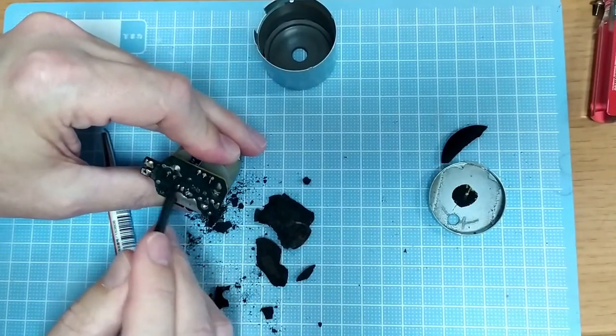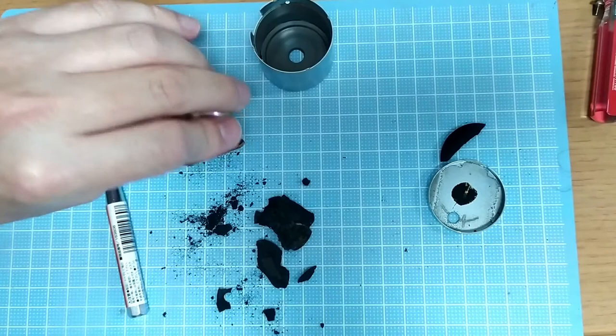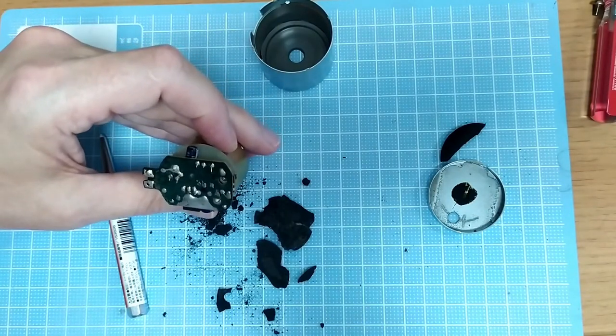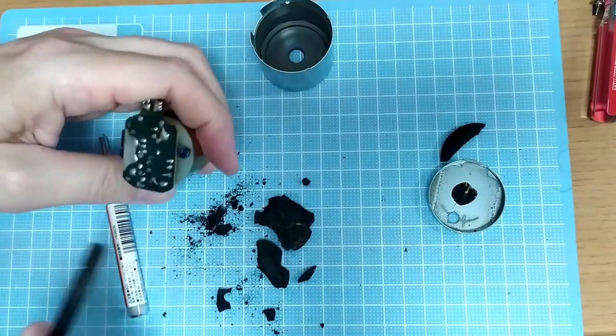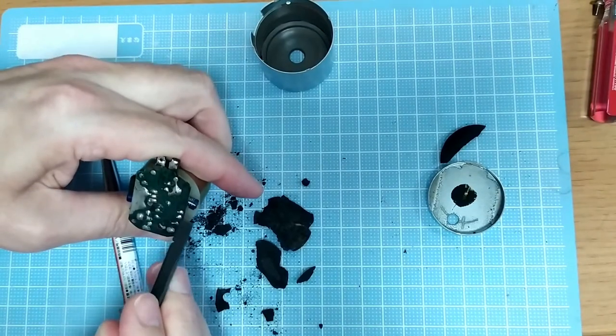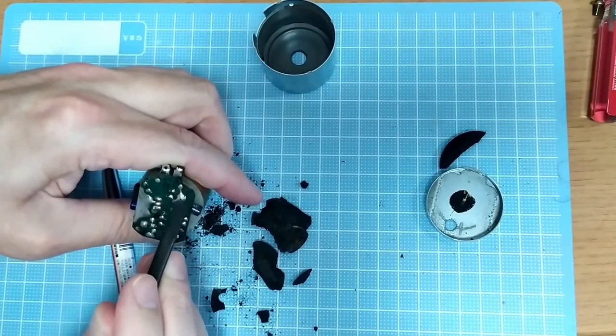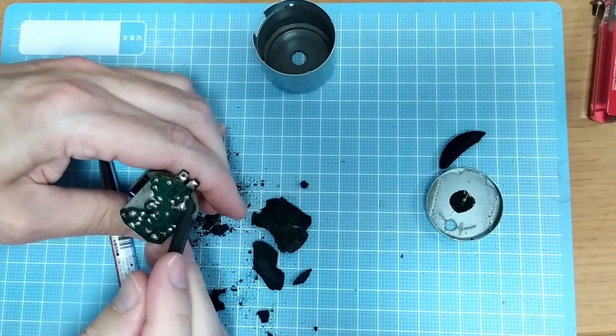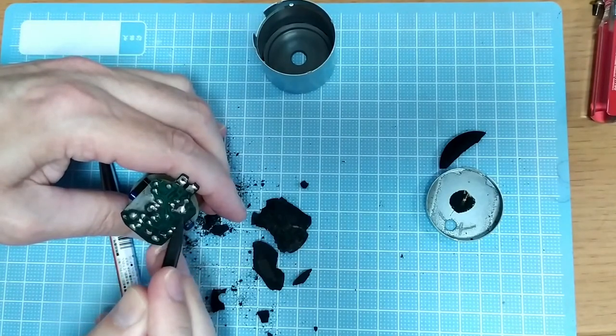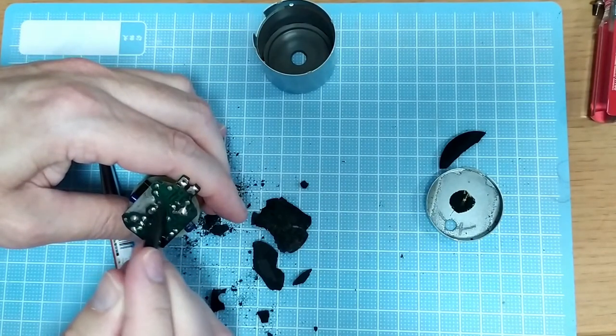This is making a nice little mess, but I think that's probably about as clean as I'm going to get it with the scraper. Maybe a few little bits there. They come off. Then I think now we'll just use a bit of alcohol or something just to clean the rest of that gunk off.